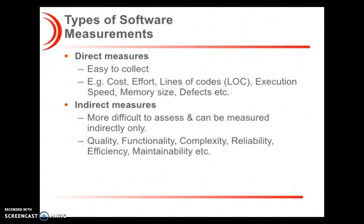Here you can see the types of software measurements: direct measures and indirect measures. Direct measures are easy to collect, and they relate an attribute to a number or symbol without reference to any other object. Examples include cost, effort, lines of code, execution speed, memory size, defects, etc.